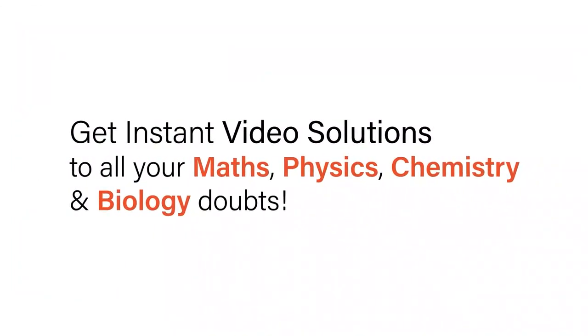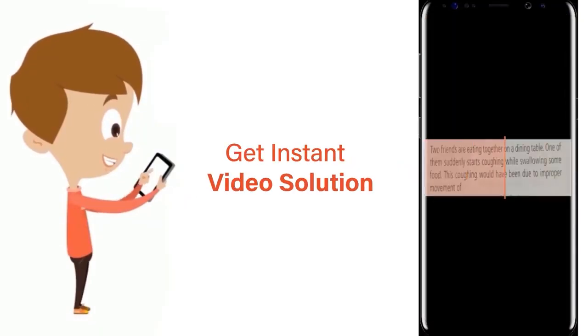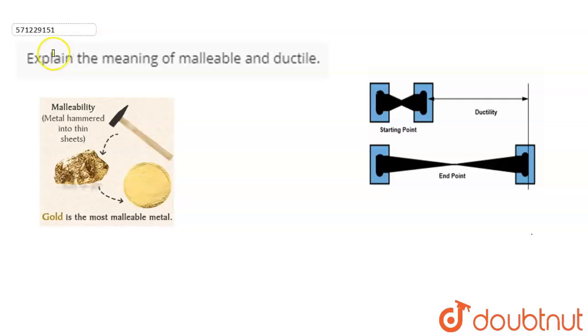With Doubtnet, get instant video solutions to all your maths, physics, chemistry, and biology doubts. Just click the image of the question, crop it, and get an instant video solution. Download the Doubtnet app today. Hello everyone, the question is: explain the meaning of malleable and ductile.